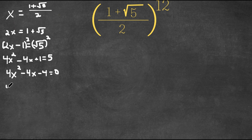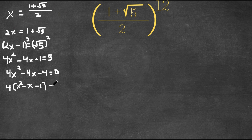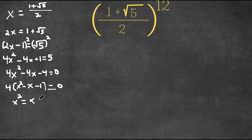And now if I factor out four from this — because all the coefficients are four — I get x squared minus x minus one, and this is equal to zero. So now if I add x and one on both sides, I get x squared equals x plus one.